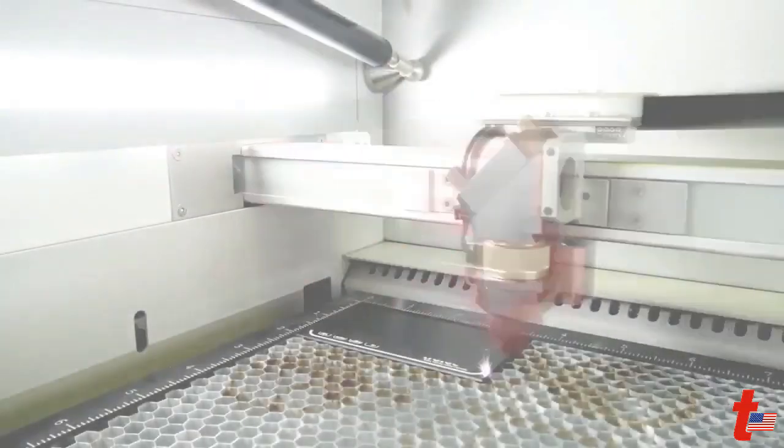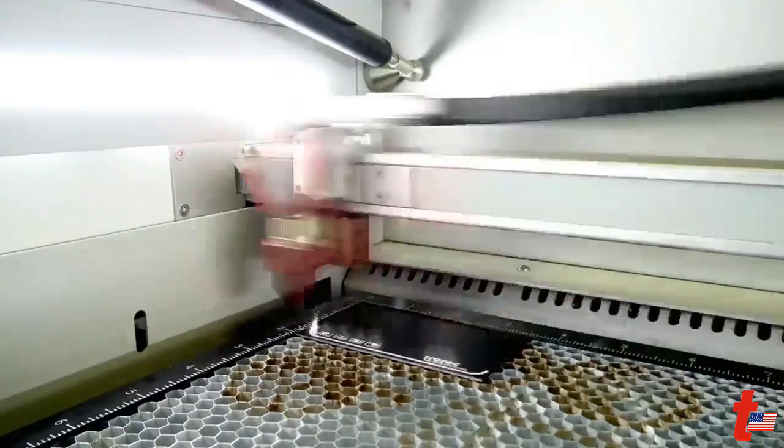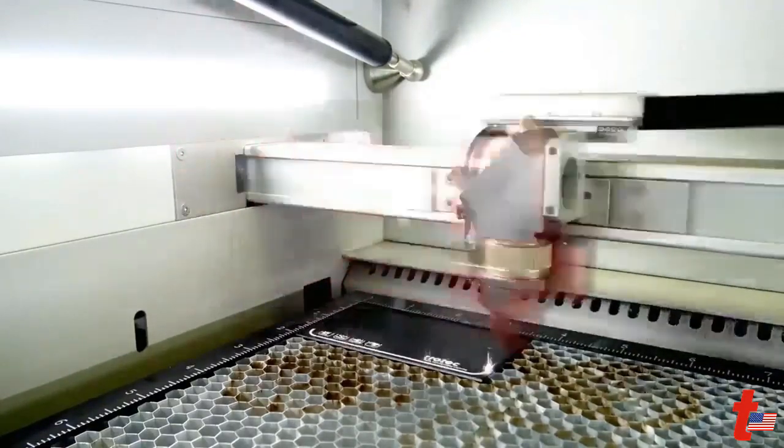For this first example, we will engrave a Trotec test graphic using the 1.5, 2.5 and the 4 inch lens on anodized aluminum.